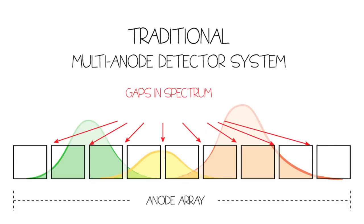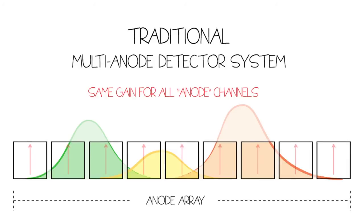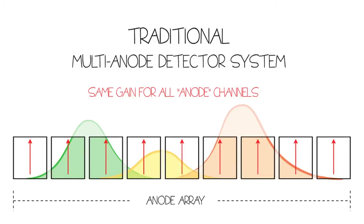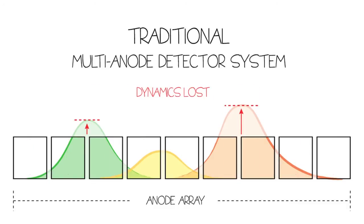And because it's a single detector system, uniform gain is applied to all signals regardless of individual fluorophore intensity. The fixed nature of the anode windows prevents the multi-anode detector from adapting detection based on the emission signal.